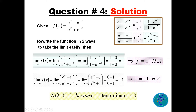First, multiply numerator and denominator by e^(-x): e^x times e^(-x) becomes e^0 = 1, giving (1 - e^(-2x)) / (1 + e^(-2x)). Second, multiply by e^x to get (e^(2x) - 1) / (e^(2x) + 1). The idea is to have one form for the limit as x goes to plus infinity and another for x goes to minus infinity.